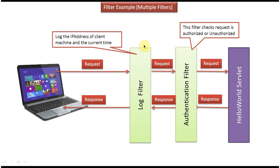In this video tutorial I will cover how to configure multiple filters. On the left side you can see the client. The client sends a request to the HelloWorld servlet. Before the request goes to the HelloWorld servlet, it will first go to the log filter. What this log filter does is it will log the IP address of the client machine and the current time, then it will forward the request to the next resource in the chain.